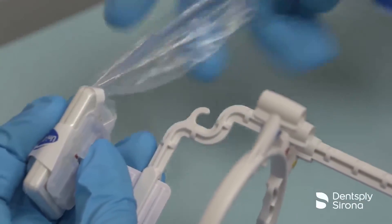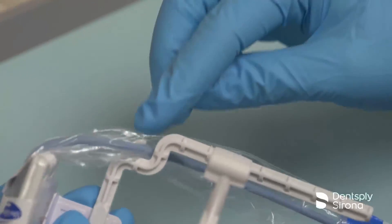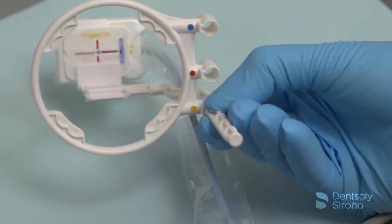The Unigrip arm and ring system offers a small hook feature to allow the clinician to rest the cord out of the way of the patient's bite, preventing cord drag.